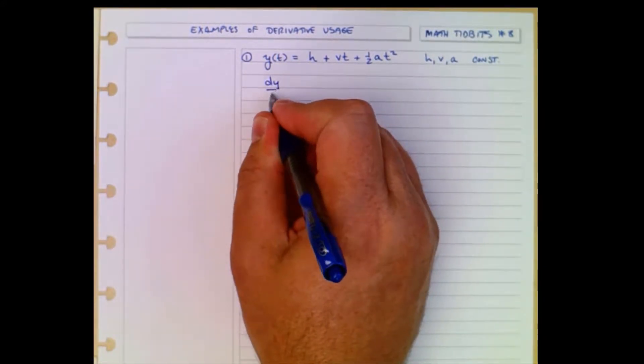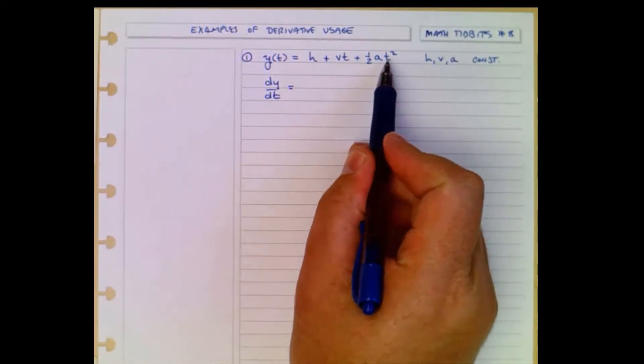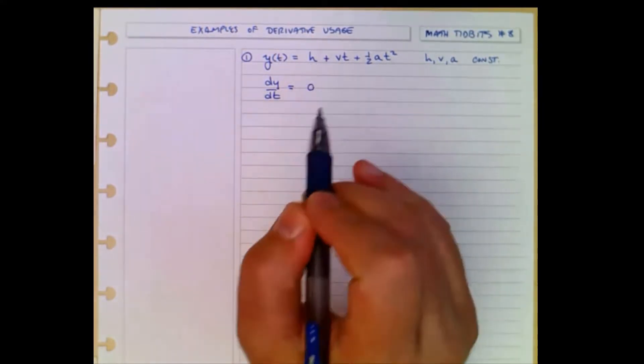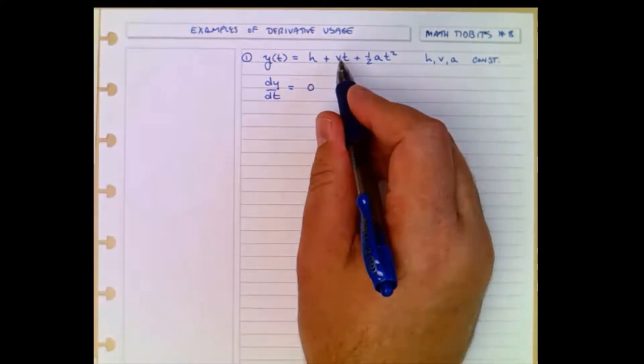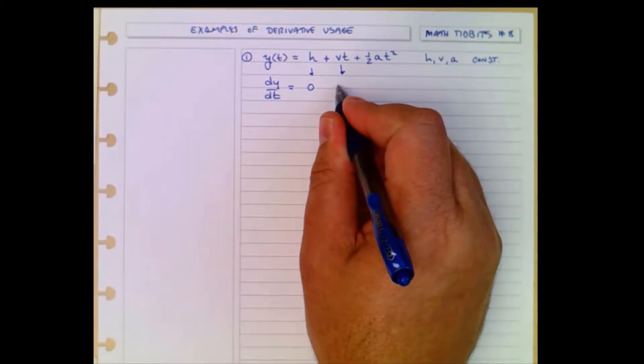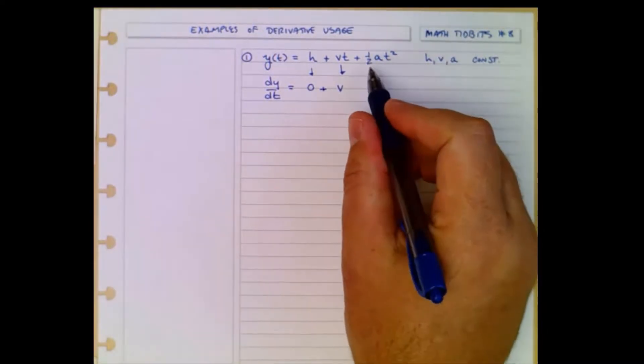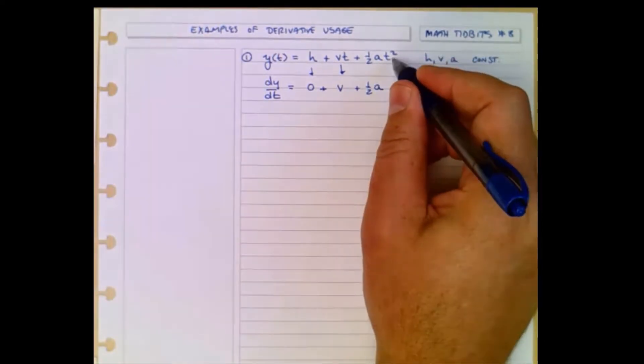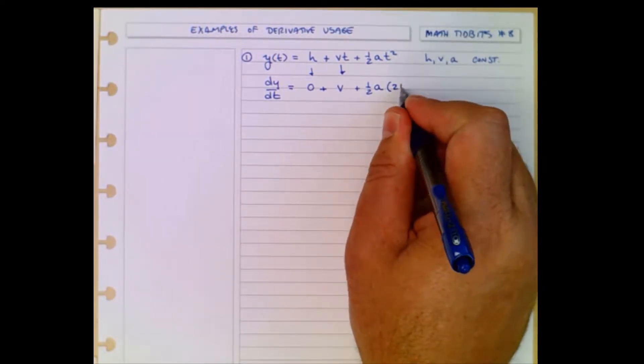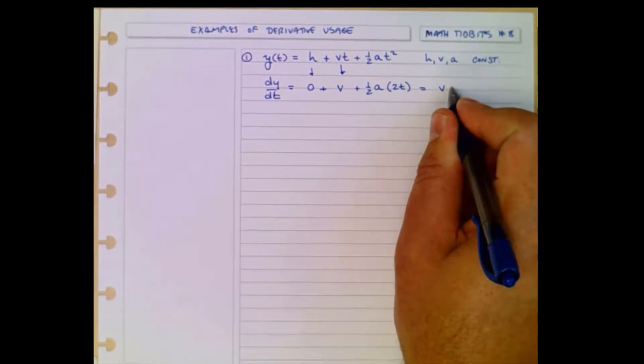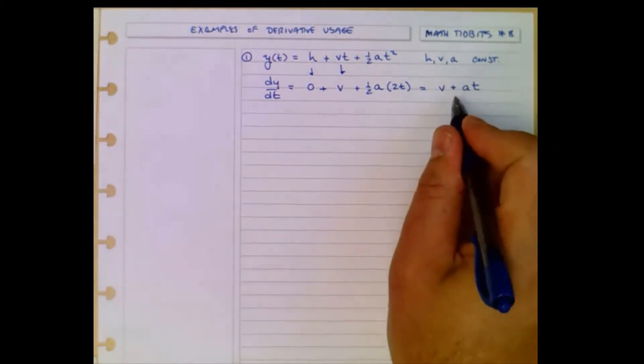So we want to know what dy dt is. We simply look at this as a sum of three powers of t. Derivative of a constant with respect to any variable is always zero. Derivative of vt, derivative of t with respect to t is one, so the derivative of vt is just v. And the derivative of 1 half at squared is going to be simply plus 1 half a times the derivative of t squared, which is 2t. I pull that 2 down, leave behind a 1. And so this result is v plus at. And that is the velocity equation for constant acceleration.